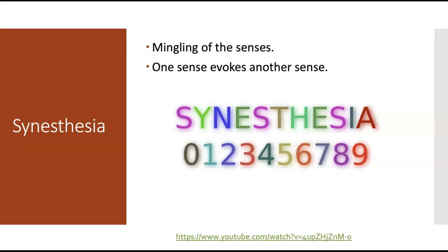The second perceptual disorder is synesthesia, a very rare condition thought to occur in about 4% of the population, where our senses become mingled. One sense will evoke another: for example, letters or numbers might have colors, music might have colors or a taste, or certain names might have a taste. One theory relates to synaptic pruning — when we're born, our brain creates many connections between neurons, and during childhood, unused connections are pruned away.